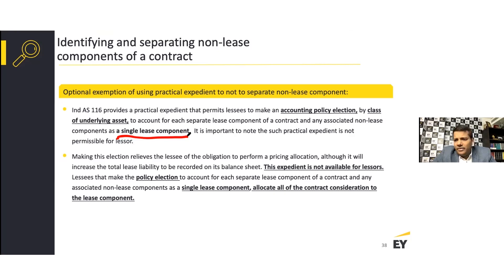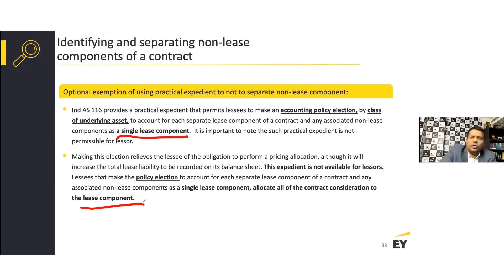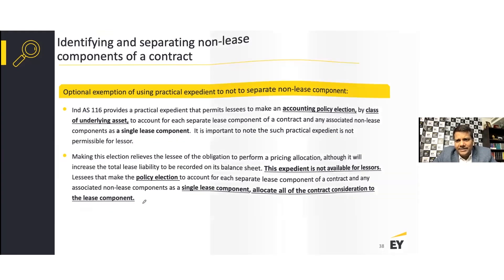Making this election relieves the lessee of the obligation to perform a pricing allocation, although it will increase the total lease liability recorded on the balance sheet. The expedient is not available for lessors. Lessees that make the policy election to account for lease and non-lease components as a single lease component allocate all contract consideration to the lease component. They may also need to make disclosures that non-lease components have been included as part of the lease component by opting for this practical expedient.